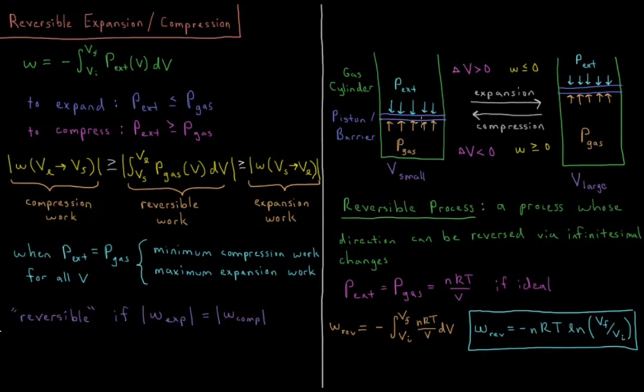So whenever our volume increases, our final height is greater than our initial height. That is an expansion event. The change in volume is greater than zero, and the pressure is always a positive number. So the work that we do is negative. The system does work on the surroundings, thus the energy of the system goes down.